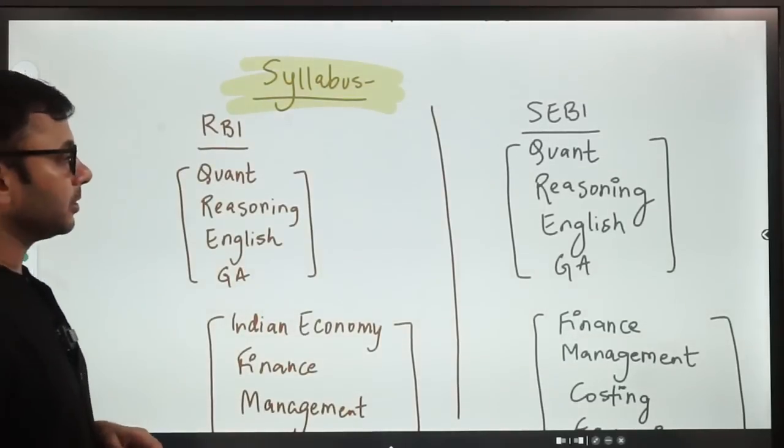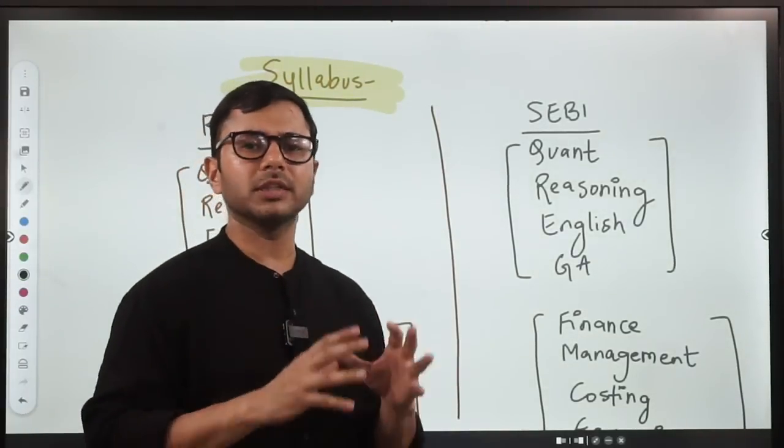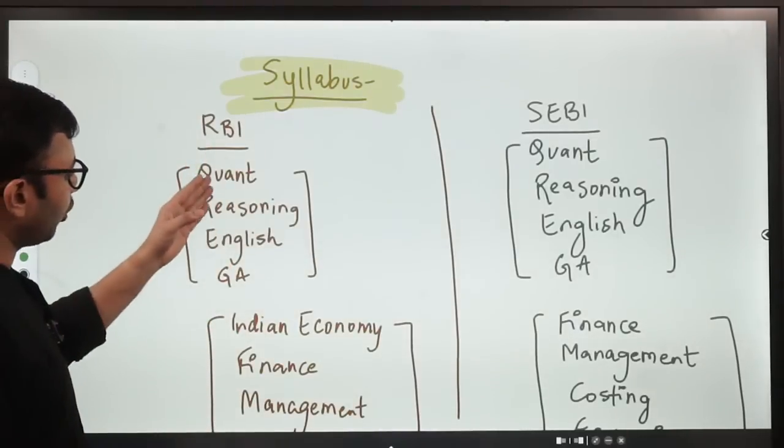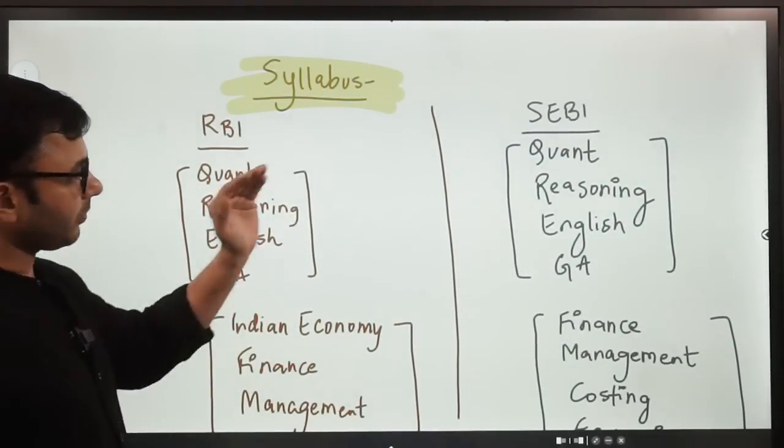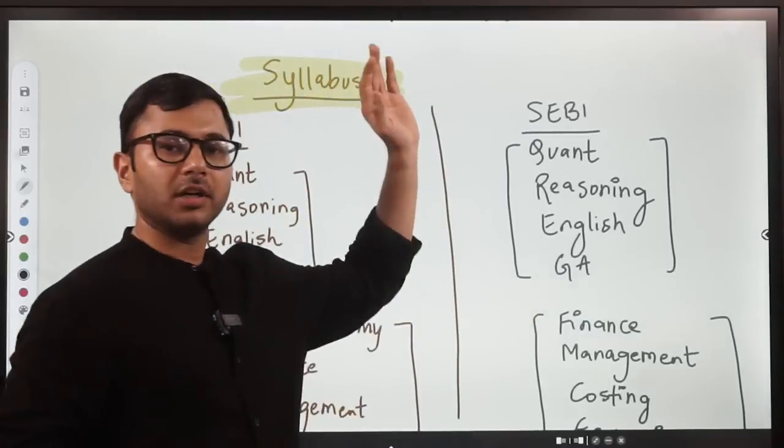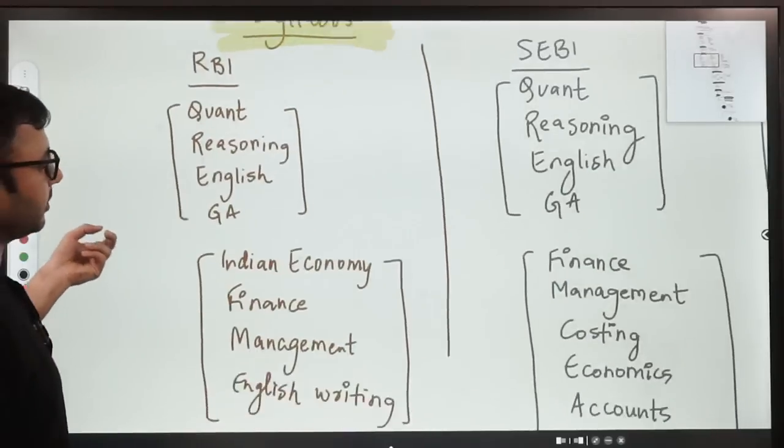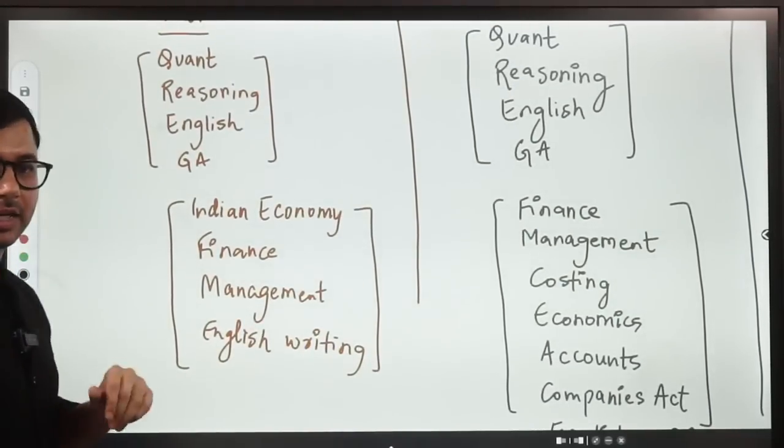Now, let's get to the syllabus, which is considered the most important and the most scary for a lot of aspirants. If we talk about RBI, Quant, Reasoning, English, GA. If we talk about SEBI, Quant, Reasoning, English, GA. NABARD की बात करेंगे, वहाँ पर भी ये common subjects हैं, जो तीनों exams में आते हैं.